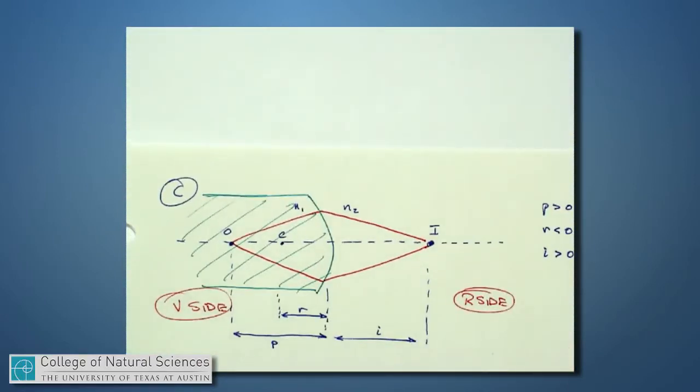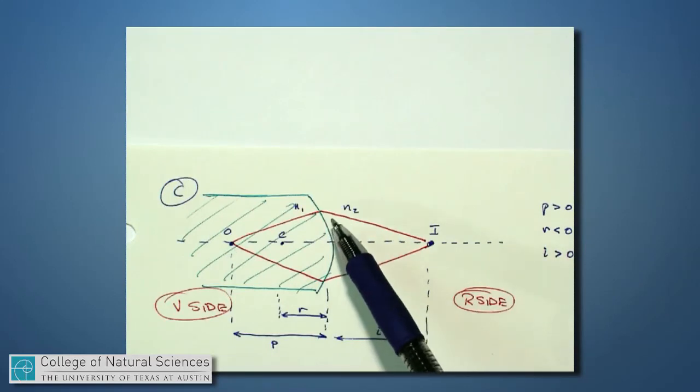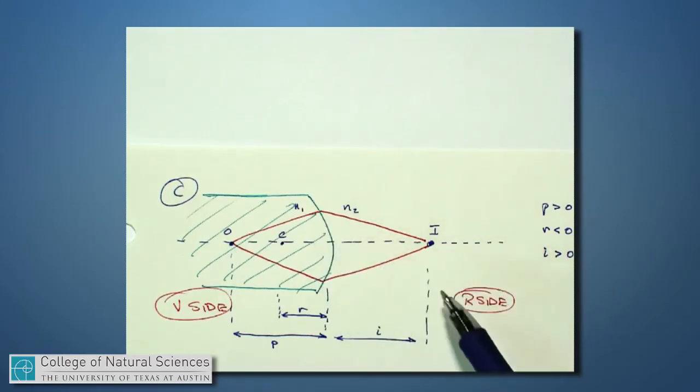There's another example we can consider where light actually starts from a high index area, and I put my object out there in the middle. This might be like the fish in the fish bowl before. Light rays are coming along and refracting at the surface, and in this case, p is positive, r is actually negative, because if I expect the light to refract and end up over here, then this is the V side, this is the R side.